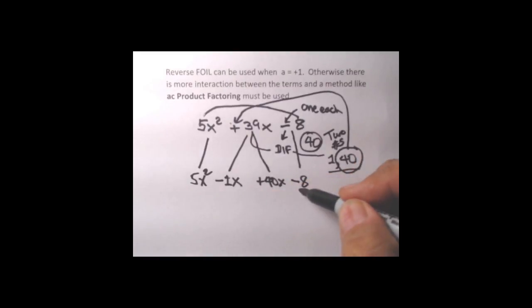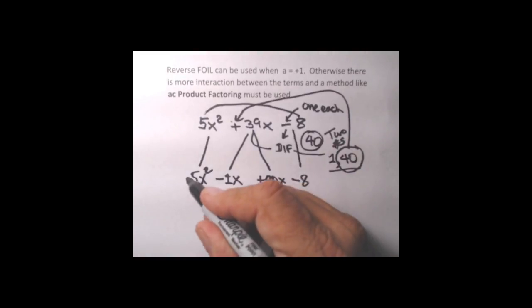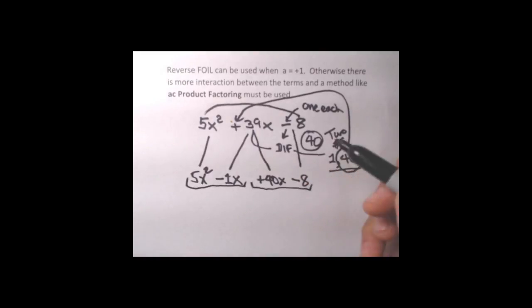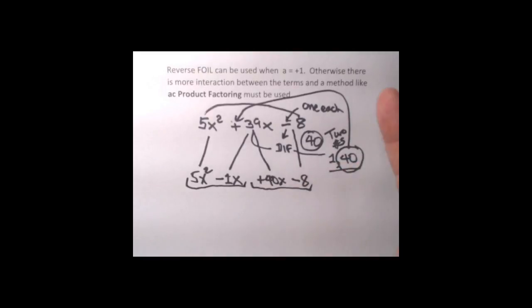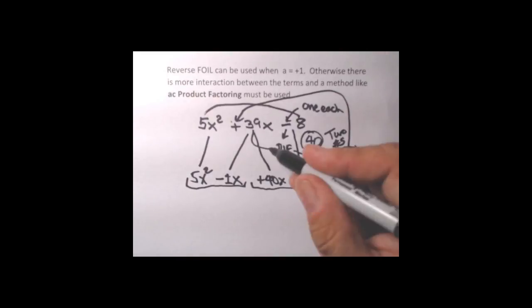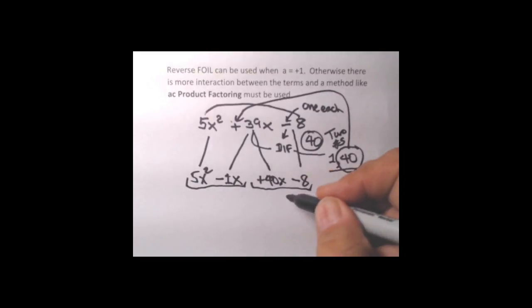Now we've got four terms, and four terms we can factor with factor by grouping. Take the first two together and the last two together. If you did factor by grouping on some other original problem, it might or might not work depending on whether the problem was factorable. But here, since we've got winning numbers, if we haven't made any mistakes, then factor by grouping is guaranteed to work.